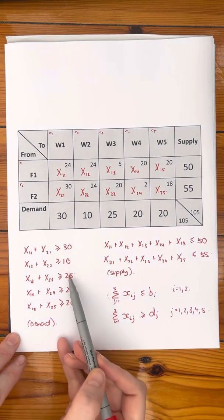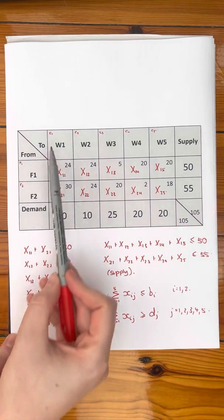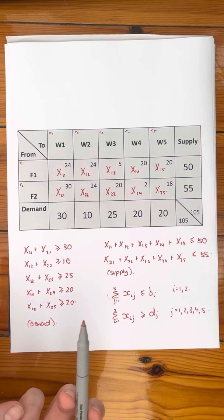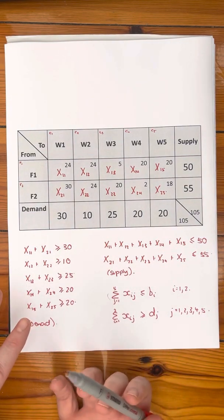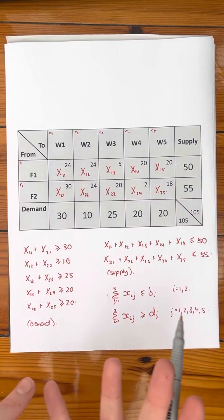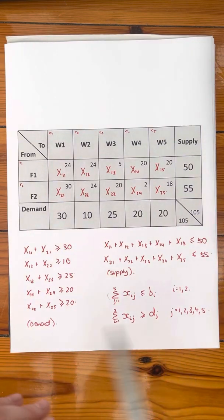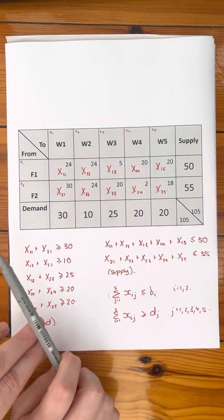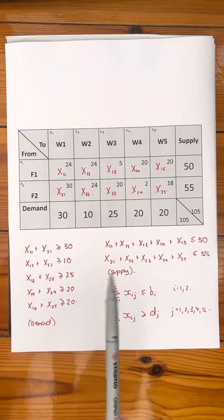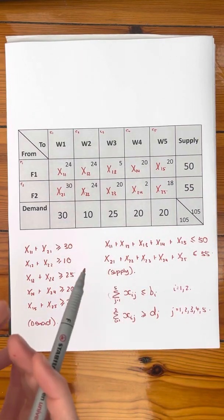So you can count how many constraints you have just by counting your columns and rows. You have 5 demand constraints plus 2 supply constraints, giving you 7 constraints total. But what's going to happen is, when you have these 7 constraints, one of those constraints can be derived from the others — so if you add up 6 of them, you can find the 7th.